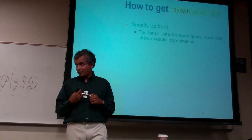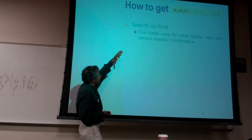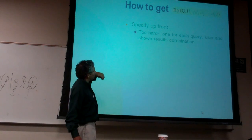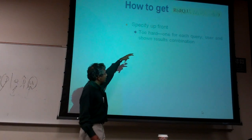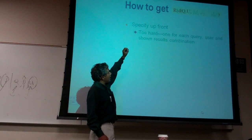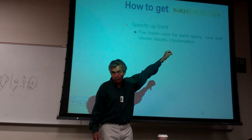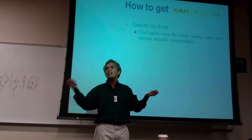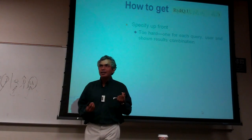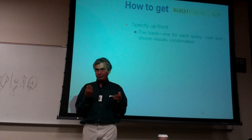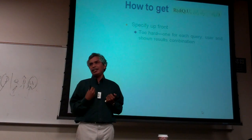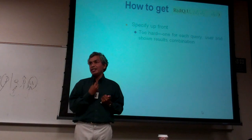But the overall problem is it's just too hard. You need one relevance number for each query, user, document, and the shown list of documents combination. There's just too many of those combinations. You need too many numbers. The problem is not numbers, but how do you get them. If you're eliciting them, it's just too many numbers to get. Even Nielsen would not be able to get these many numbers.